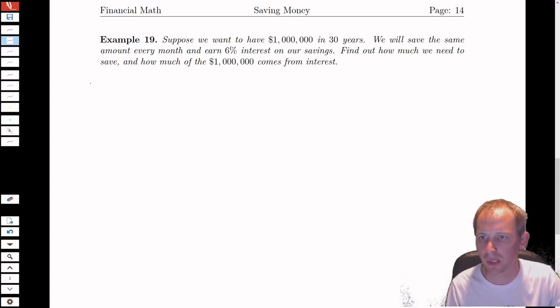So we know what our ending goal is. That million dollars is the future value, or you could say it's the ending amount A.